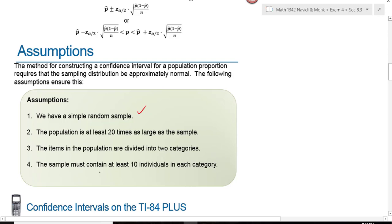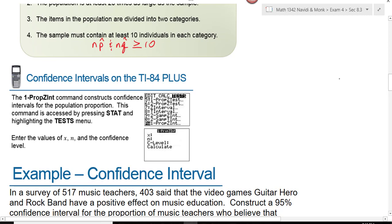And the sample has to have at least 10 individuals in each category. So N times P-hat and N times Q-hat have to be greater than or equal to 10. What we look for on our calculator is one proportion Z intervals. We get to this by hitting stat, then going over to test and then down to one prop Z interval.